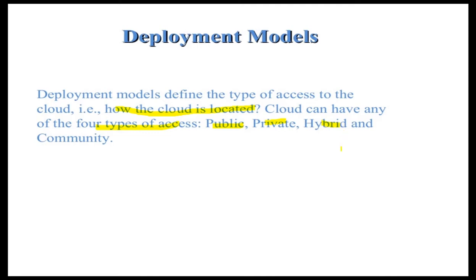For example, CBSE's website has notifications and result dates that are publicly accessible by anyone. But there is also some private information for teachers — only teachers can log in and access that data. This is known as hybrid cloud computing, where a website has both private and freely accessible sections.